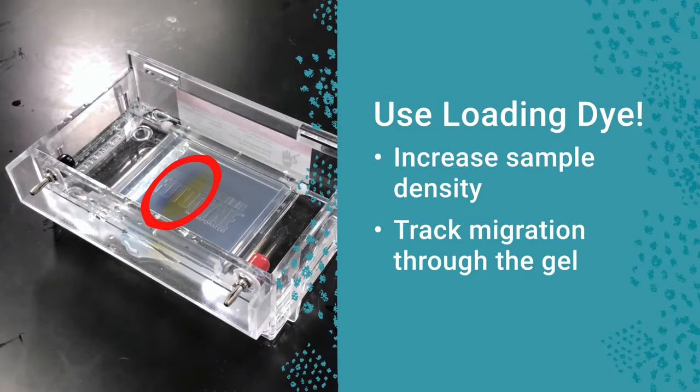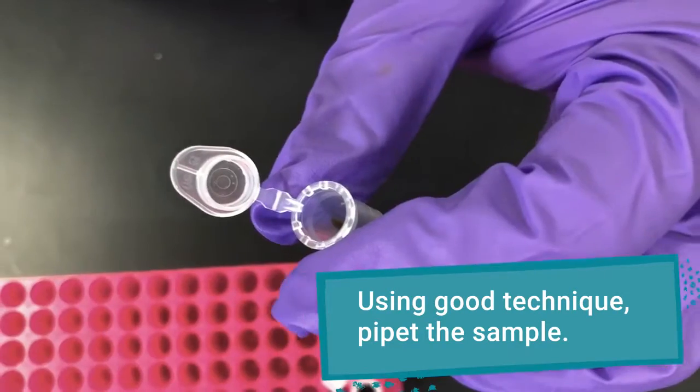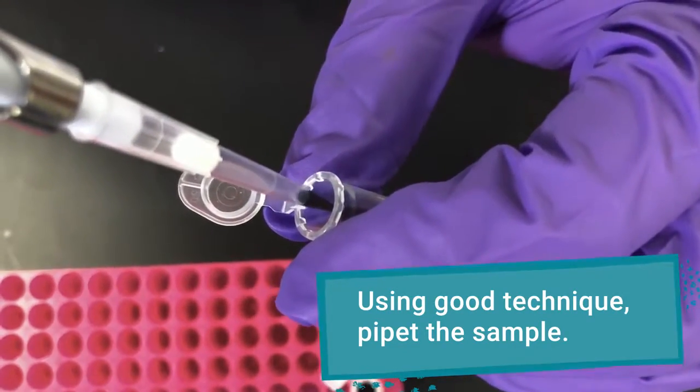To load the gel, use good pipetting technique to draw your sample into the pipette tip. Wipe off excess liquid found on the outside of the tip by dragging it across the top of the tube.